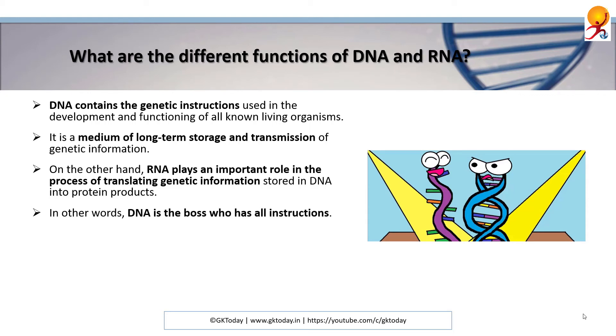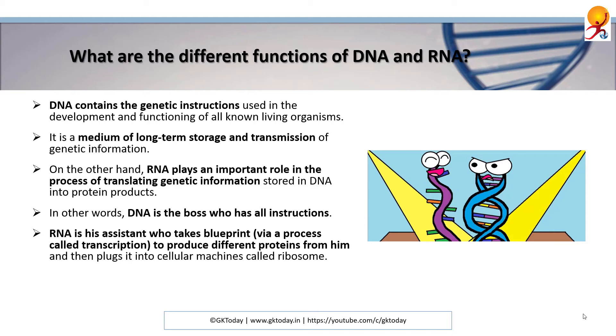In other words, DNA is the boss who instructs RNA, and RNA is the assistant who takes the blueprint to produce different proteins from this and then plugs it into cellular machines called ribosomes. This process is known as transcription. Ribosomes are the sites of protein synthesis.